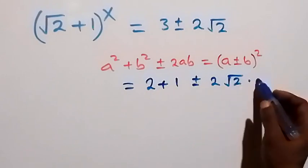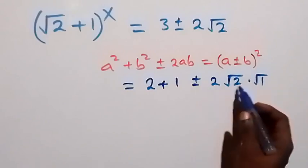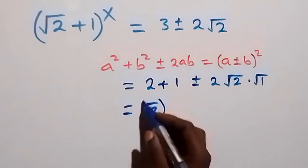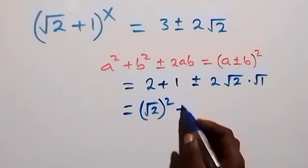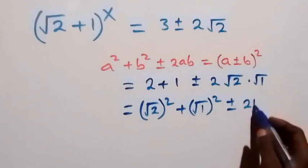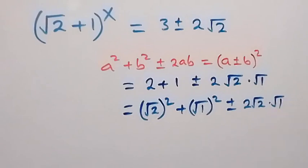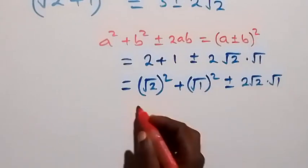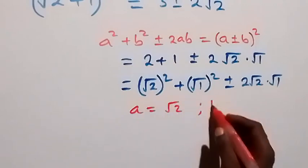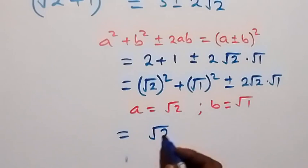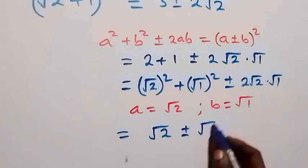We can multiply that 1 by root 1, and root 1 is 1. We can write 2 as root 2 squared — the square cancels the square root, leaving 2 — then plus 1 can be written as root 1 squared, then plus or minus 2 root 2 times root 1. Comparing this with the identity, a is serving as root 2 and b is serving as root 1. So we can write the right-hand side as root 2 plus or minus root 1, all squared.